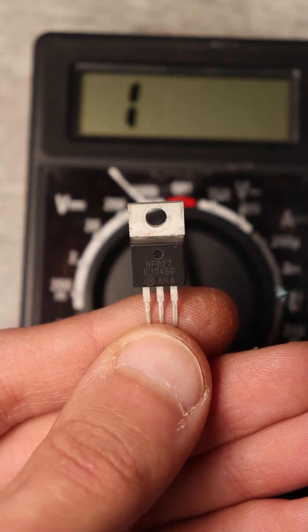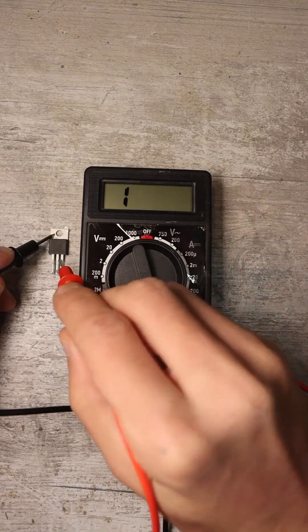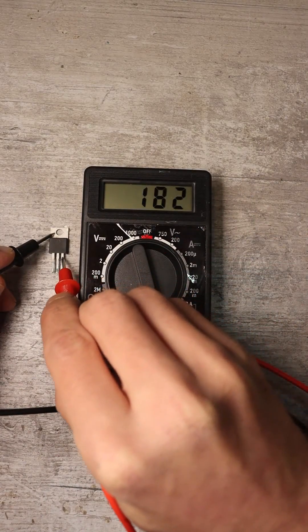For Schottky diodes, this voltage will be even lower, from 0.2 to 0.3 volts.